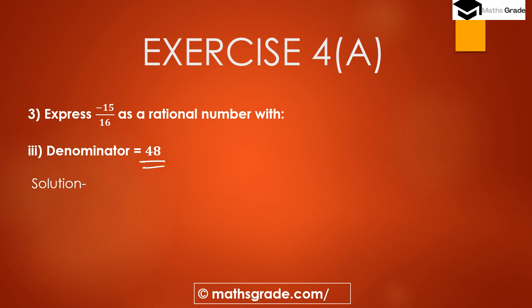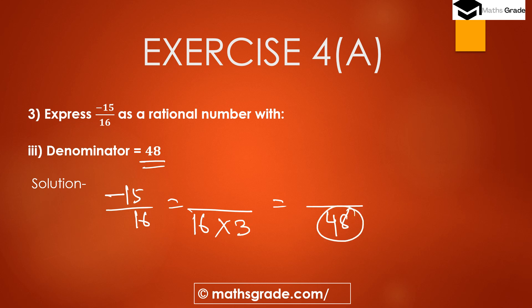Part 3: Find the equivalent rational number of minus 15 divided by 16 with denominator 48. The current denominator is 16. Since 16 multiplied by 3 is 48, we multiply both numerator and denominator by 3. Minus 15 multiplied by 3 is minus 45, and 16 multiplied by 3 is 48. So, minus 45 divided by 48 is the equivalent rational number with denominator 48.